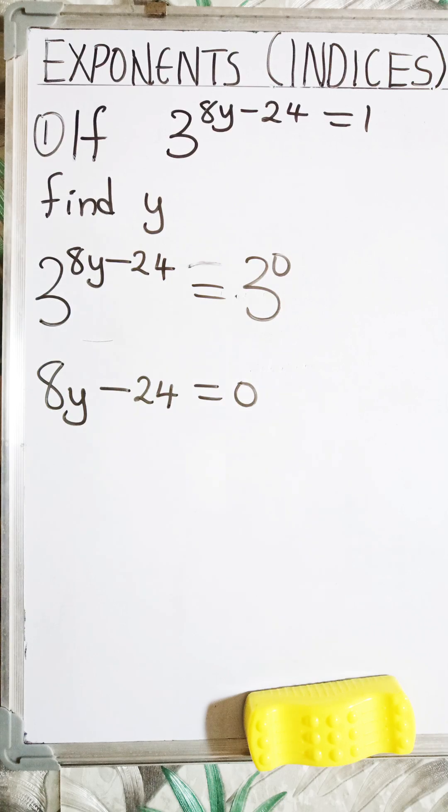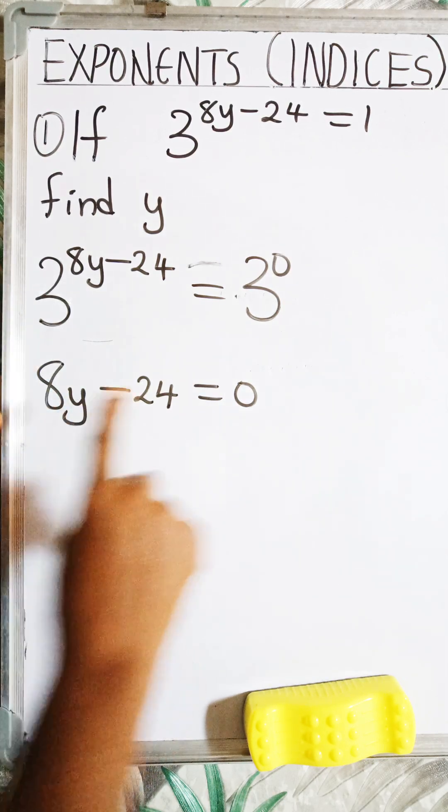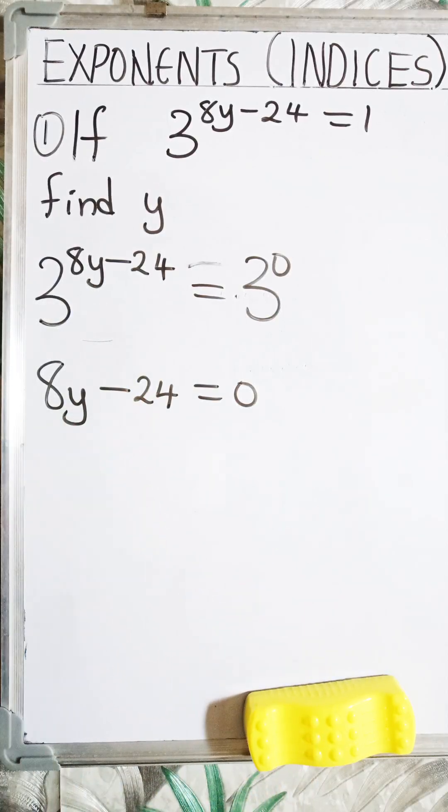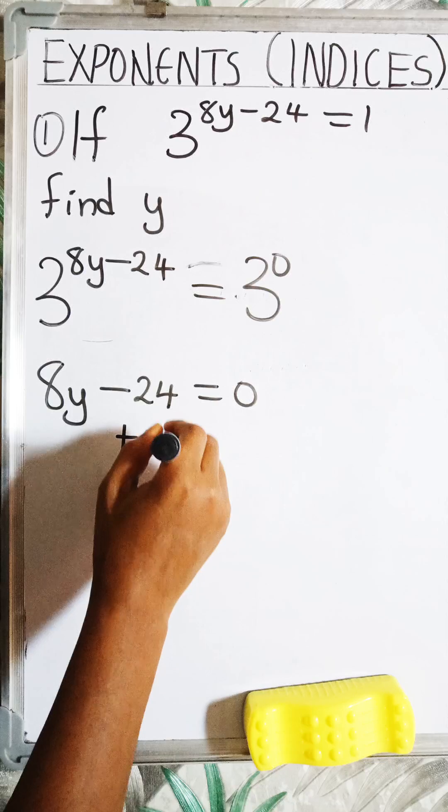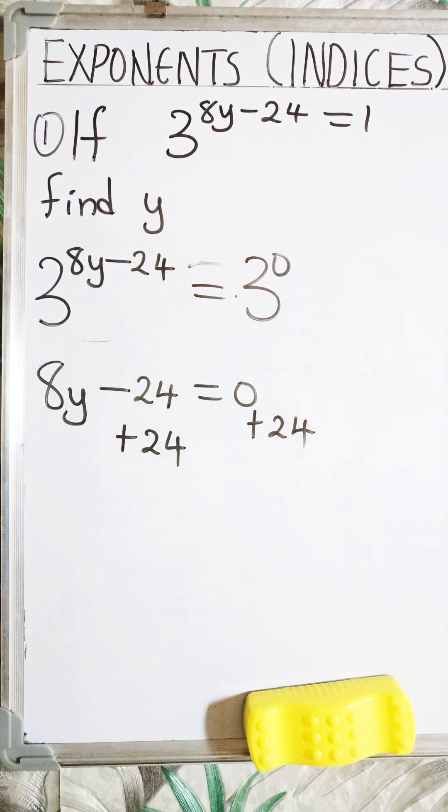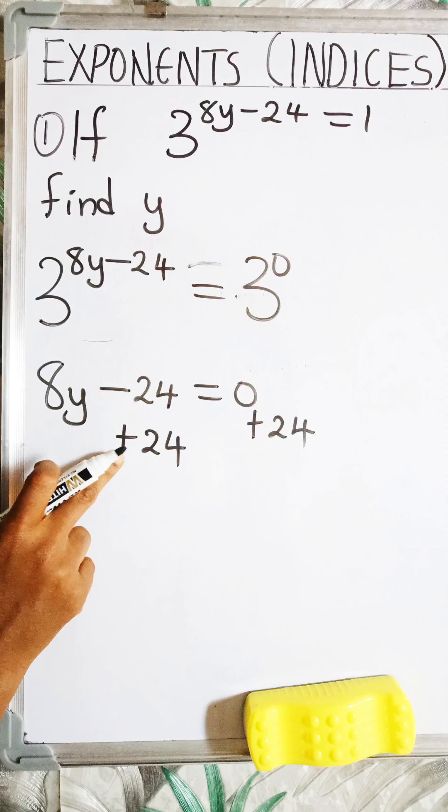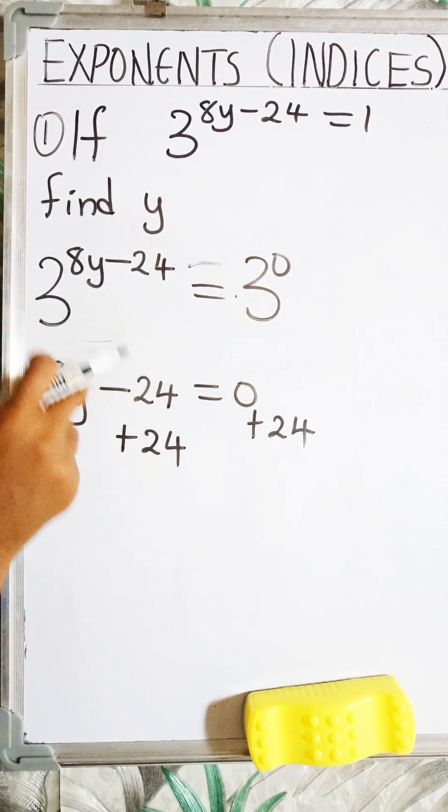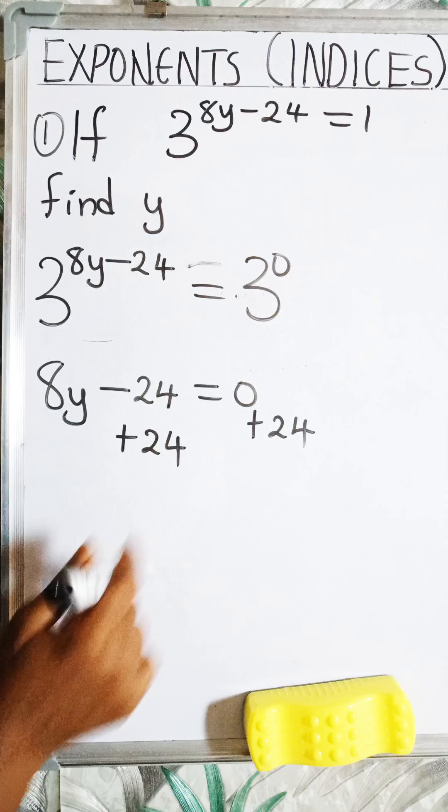So now I have 8y minus 24 equals to 0. What is the next thing to do? I have to add 24 to both sides of the equation because I need to remove this 24 from here. So if I say here plus 24 plus 24, minus 24 plus 24 will give you 0. It's just like saying 24 minus 24. So this will give us 0.